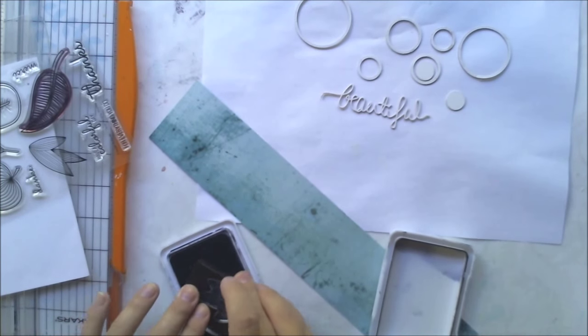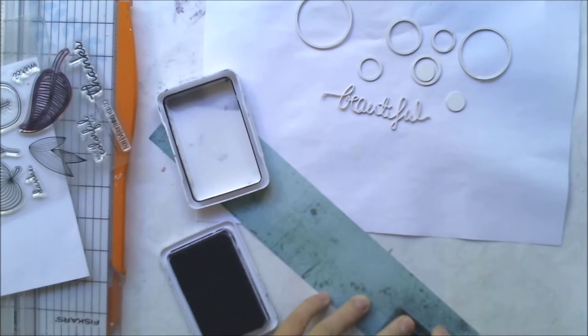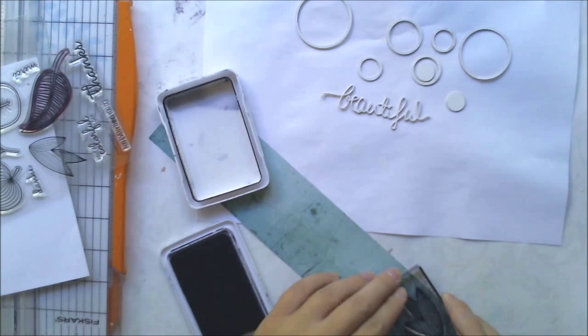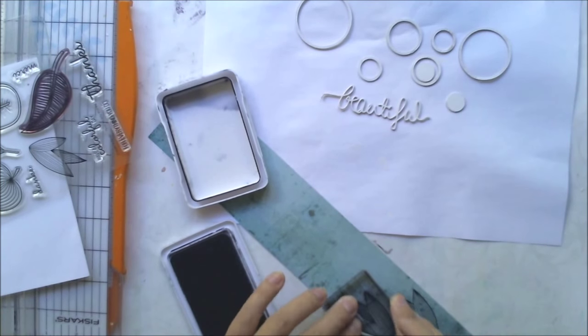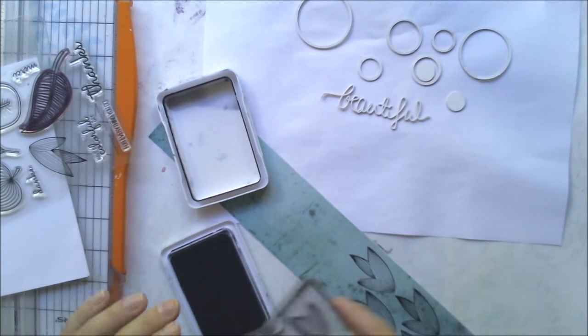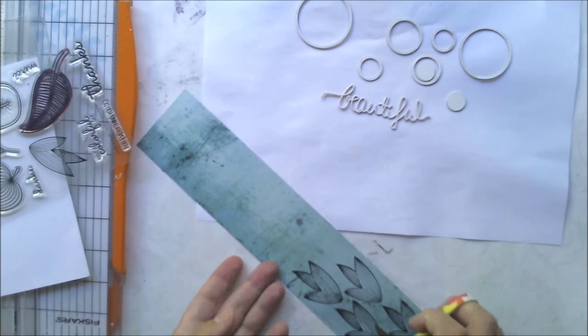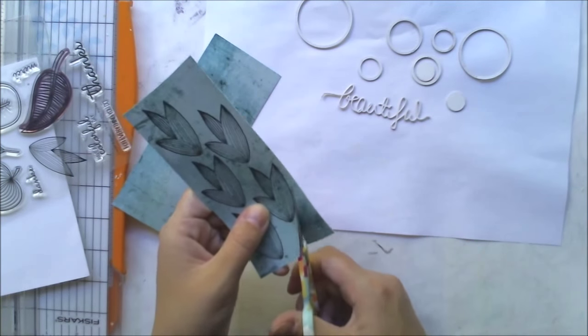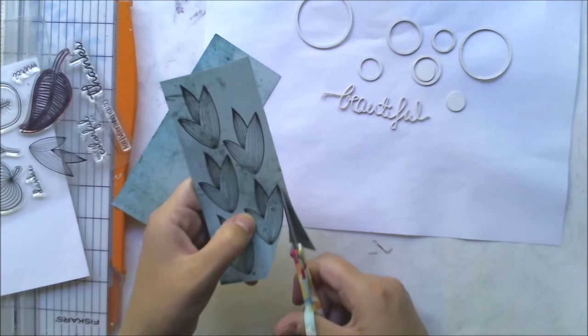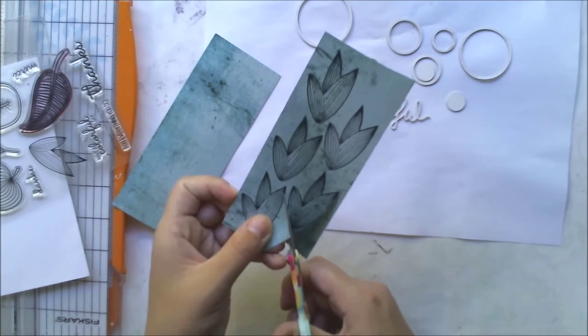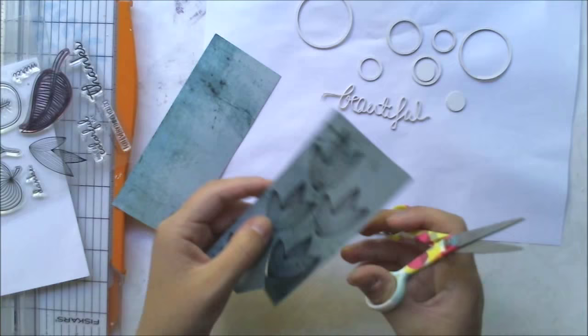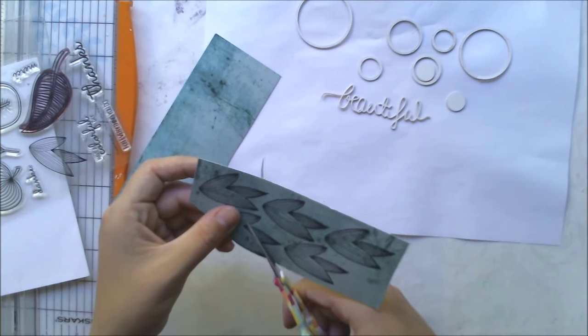Another preparation for this layout is to make stamped leaves. I'm using Time to Say Thanks stamp set from Create a Smile and this beautiful leaf together with this green patterned paper. I'm cutting them off and later using them as embellishments on my layout.